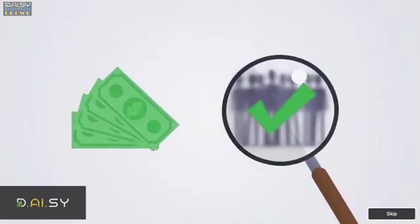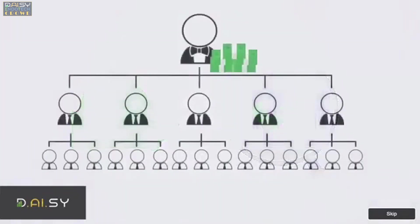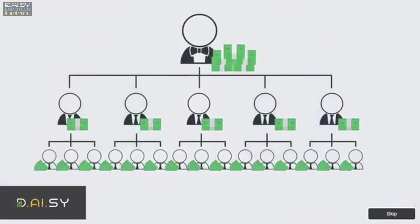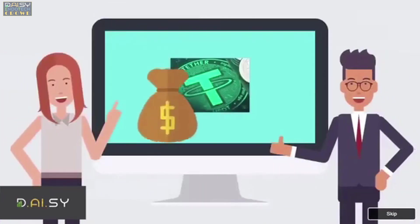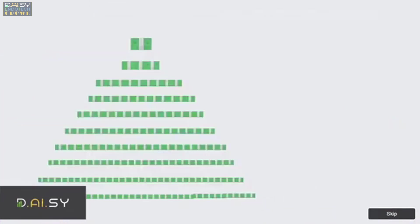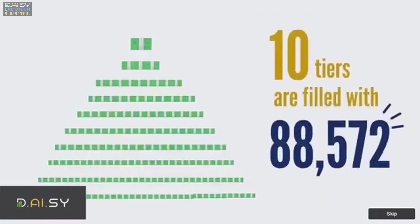Because it's a forced matrix, you can benefit from spillovers from your uplines above you in the matrix and also your downlines below you in the matrix. No matter how the matrices are getting filled, you get paid instantly to your USDT wallet.